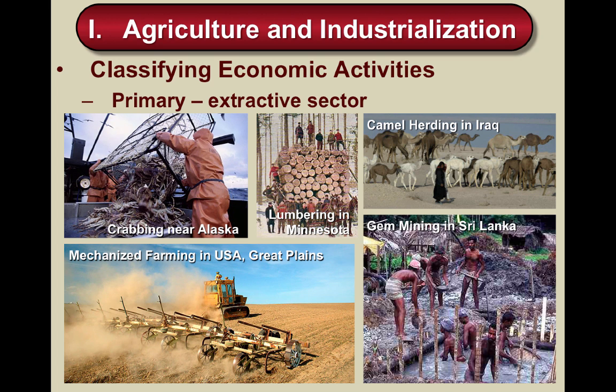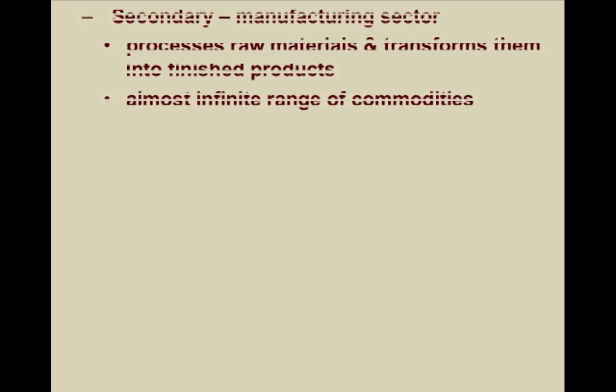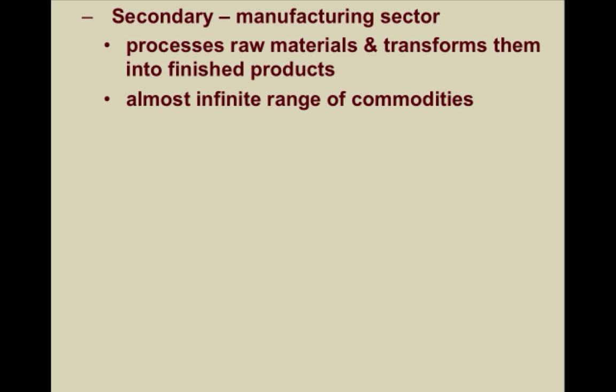In the United States today, around 1% of all people are involved in primary activities. Moving on to secondary economic activities, also known as the manufacturing sector: people involved in this kind of labor process raw materials from the primary sector and transform them into finished products.